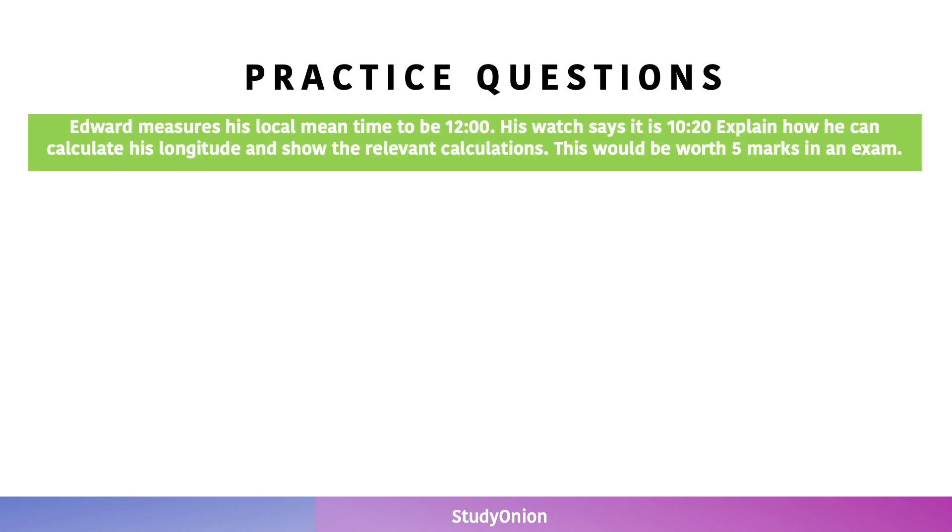Let's look at this practice question. Edward measures his local mean time to be 12:00. His watch says it's 10:30. Explain how he can calculate his longitude and show the relevant calculations. This would be worth 5 marks in an exam. I would recommend you took a couple minutes to try and work this out yourself before pressing play.